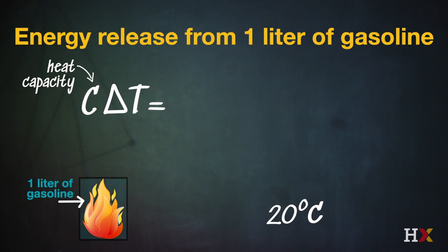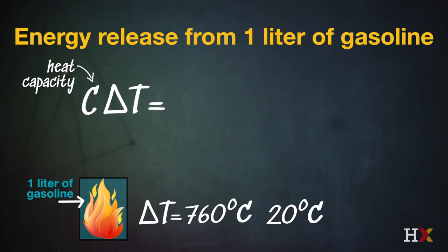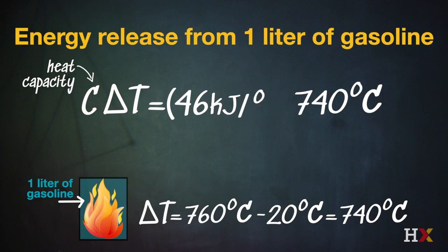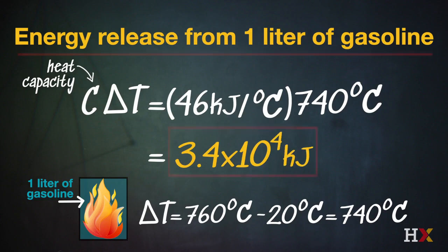When we finish adding one liter of gasoline, the temperature of that box is 760 degrees Celsius. So the change in temperature is 760°C minus the initial temperature of 20°C, which equals 740 degrees Celsius. Putting 740°C in for the change in temperature and the heat capacity of that box, we calculate that from one liter of gasoline, 3.4 × 10⁴ kilojoules of energy was released.